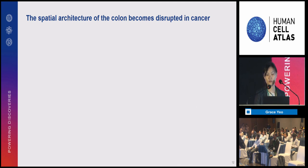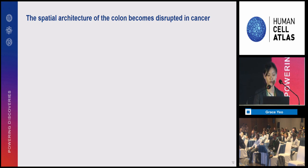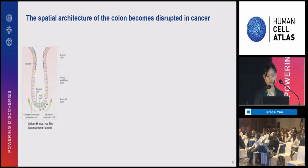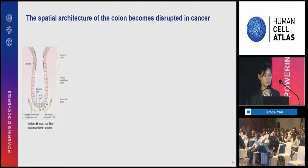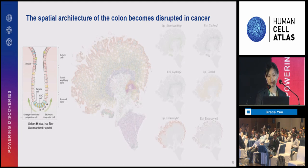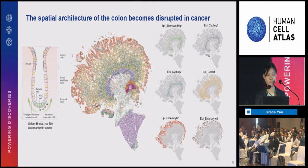Now that we've established that our spatial data is concordant with single cell, the question becomes what can we learn from the spatial data? The best way to start is with a qualitative description of what the normal colon looks like. In the normal colon, we have a nice crypt-villus structure where stem cells at the bottom, as they differentiate, rise through the transit amplifying zone up to the top of the villus, adopting functions in absorption and secretion. When we map our cell types back into physical space, we see this exact pattern.